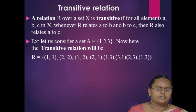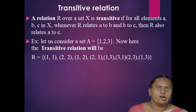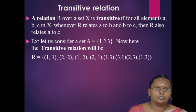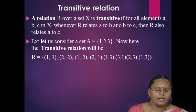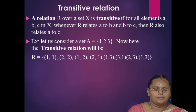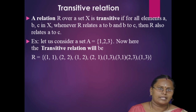For example, let A = {1, 2, 3}. The transitive relation will be R = {(1,1), (2,2), (2,1), (1,1), (2,1), (1,3), (3,1), (2,3), (1,3)}. Here, (1,2) and (2,1) implies (1,1) is in R. Similarly, other relations are also in R. So the relation R is transitive.